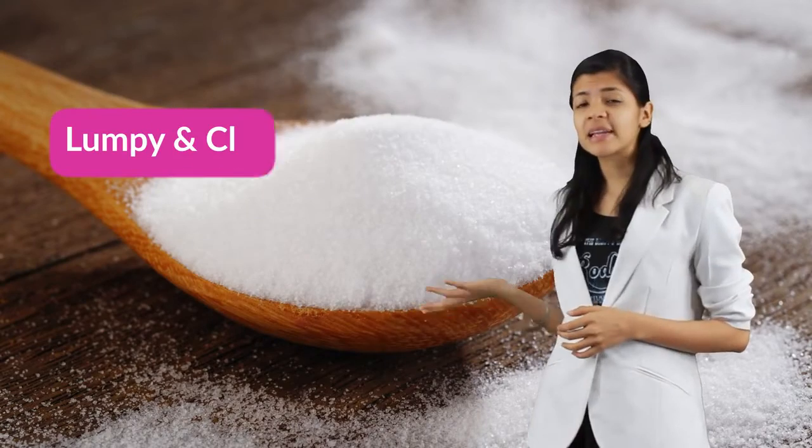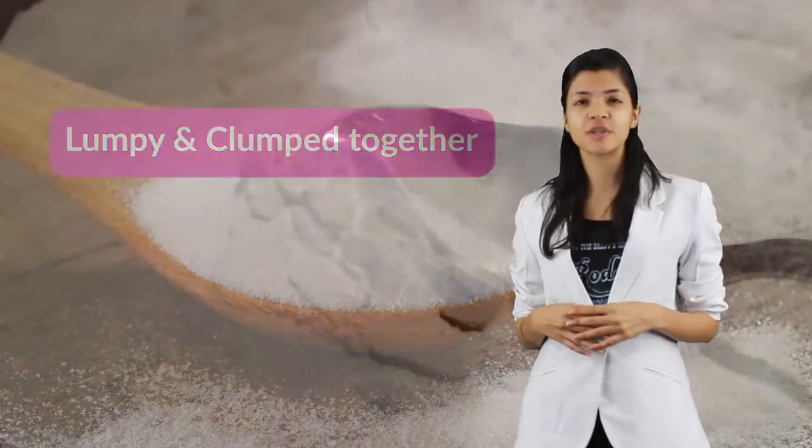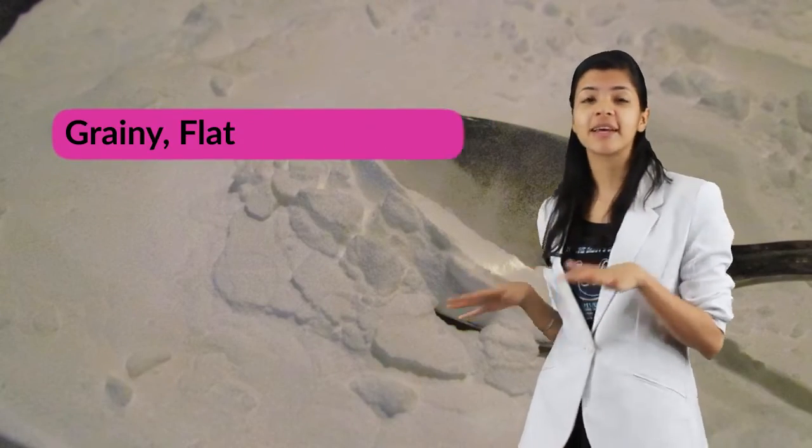You can see that baking soda is lumpy and clumped together, whereas washing soda is grainy, flat and spread out.